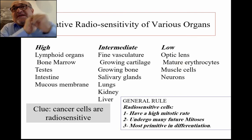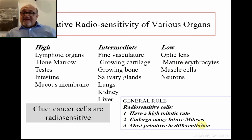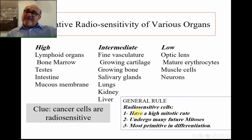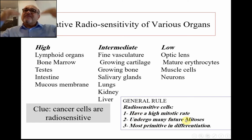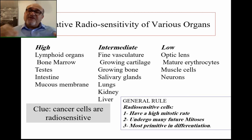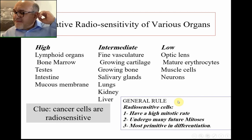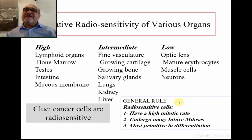Tissues least affected by radiation include the optic lens, mature erythrocytes, and muscle cells, while neurons are the least affected of all. As a general rule, radio-sensitive cells have a high mitotic rate — the higher the mitotic rate of a cell in a tissue, the more it is affected by radiation. These cells undergo many future mitoses and are primitive in nature, while highly specialized cells are least affected.